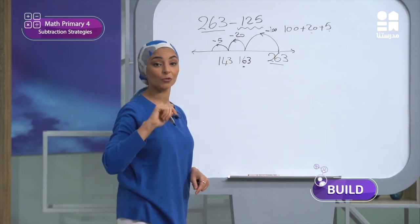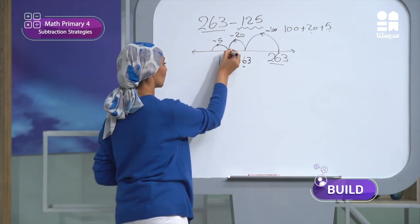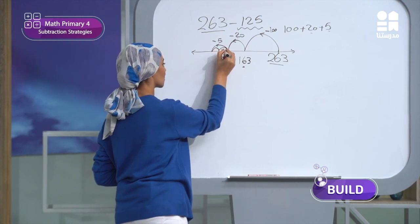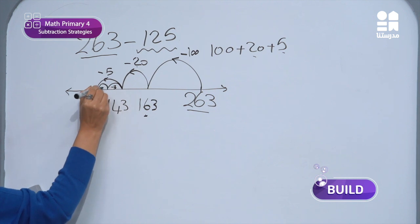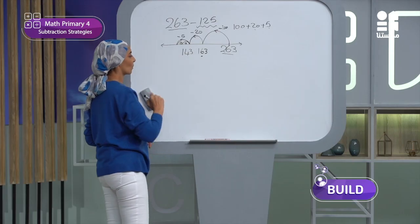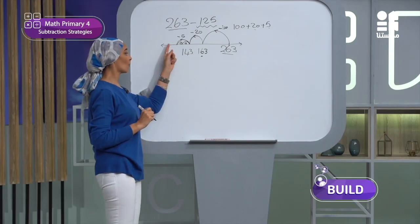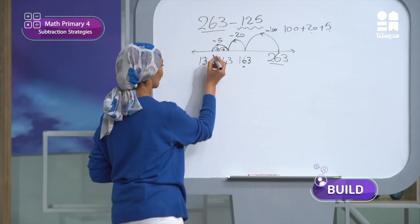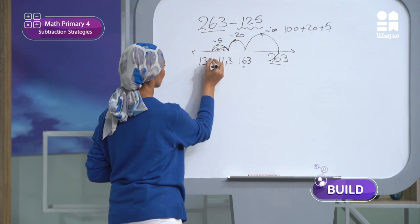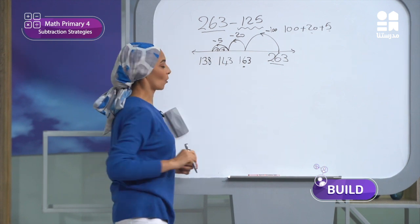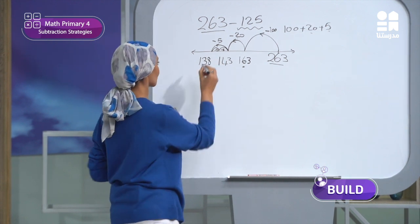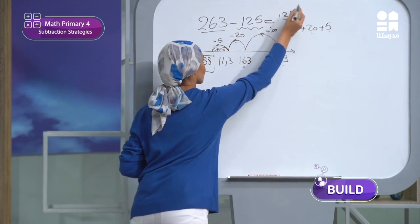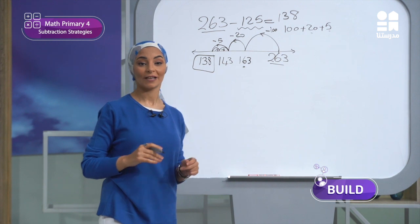We can do this in two steps: minus 3, then minus 2. So 143 minus 3 is 140, then minus 2 equals 138. The answer is 138. This is the final answer.